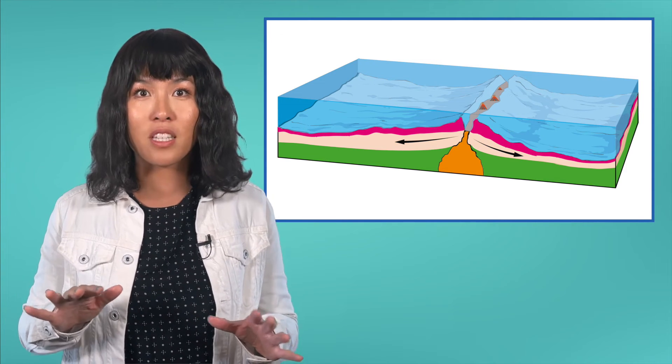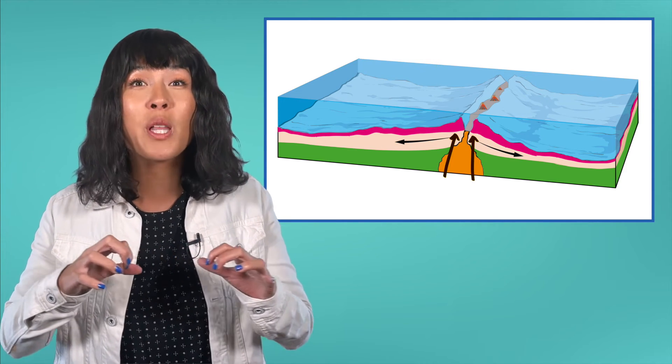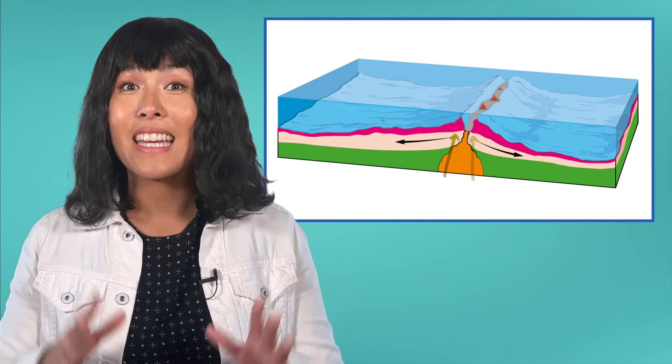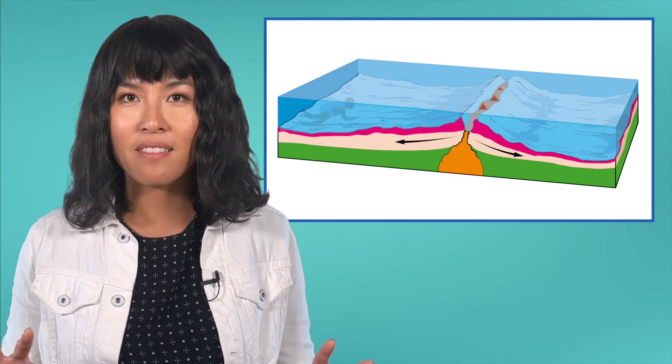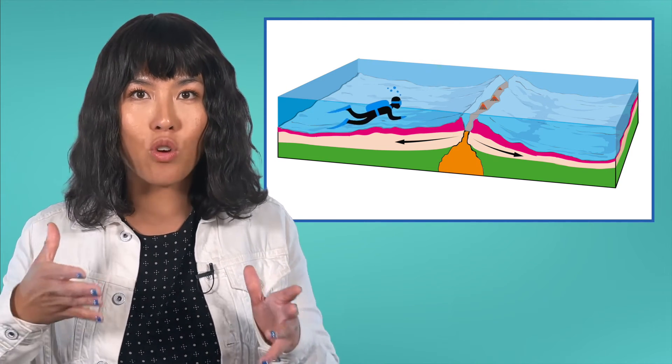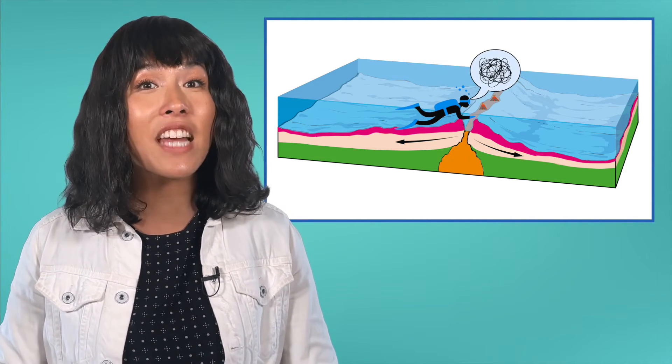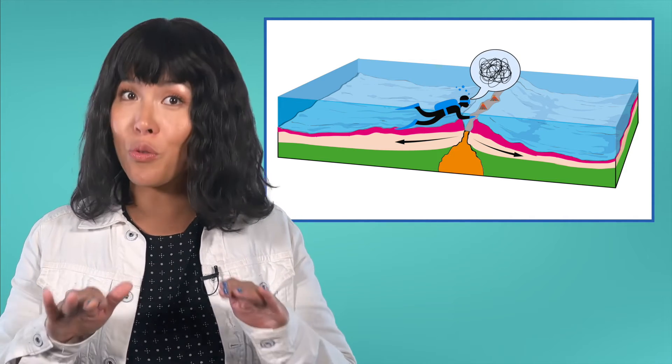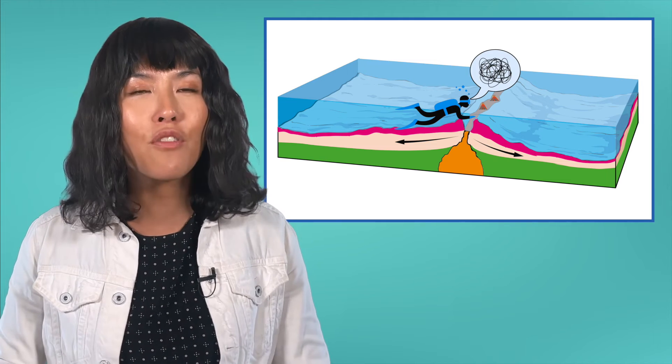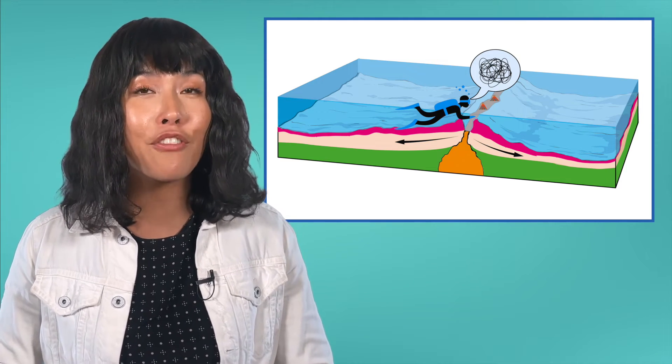These boundaries are places where the ocean floor is pulling apart. But even as the plates separate, it doesn't just create a gap in the crust where you could swim down to the mantle. That's because these divergent boundaries between oceanic plates are the site of a process called seafloor spreading.